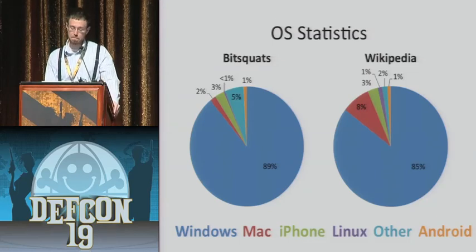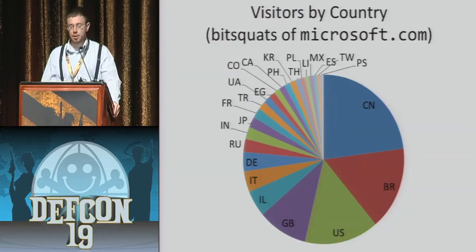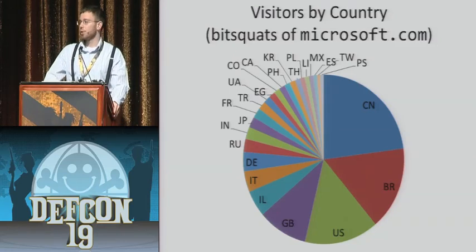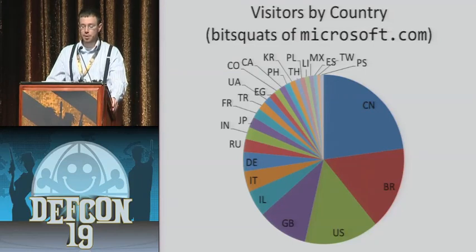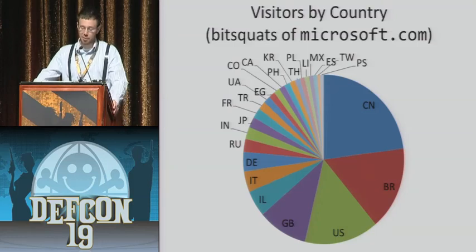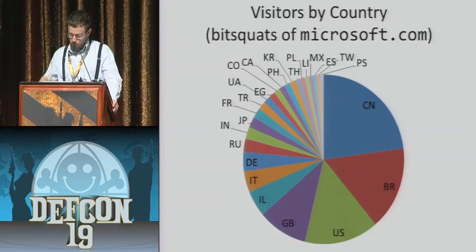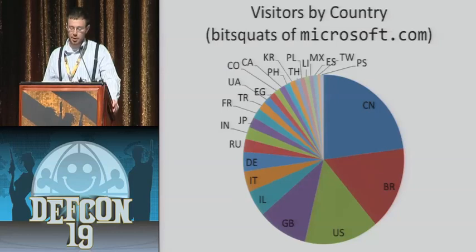Where are these people coming from? I limited this to Microsoft.com bitsquats since the vast majority of DNS lookups would in fact be from automated Windows machines. The results are extremely surprising — they do not correspond to population, number of internet devices, or number of internet users. My only guesses include that not all bitsquats are equal: sometimes you win the bitsquat lottery and get some server in FarmVille, sometimes you just bitsquat somebody's iPhone. It's entirely possible that it just happened to bitsquat more useful places in China and Brazil, but this definitely warrants further research.